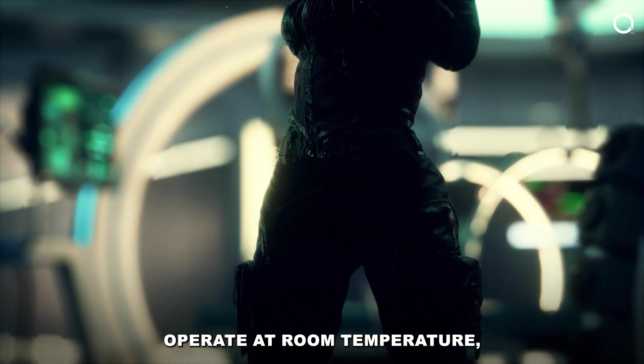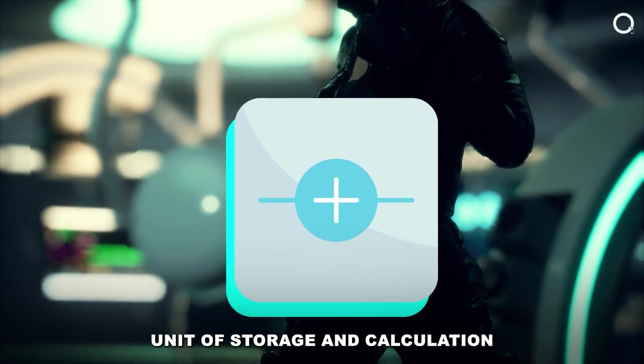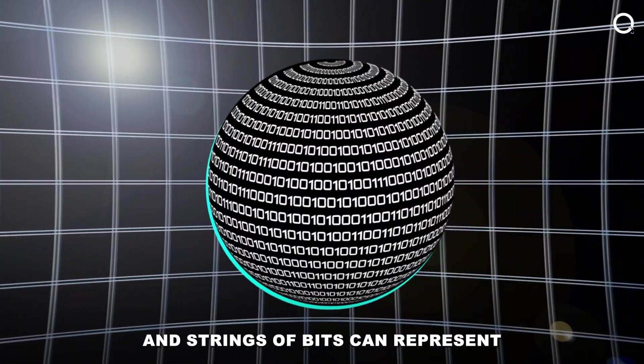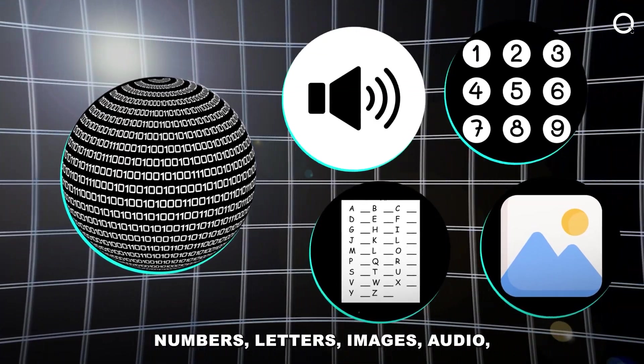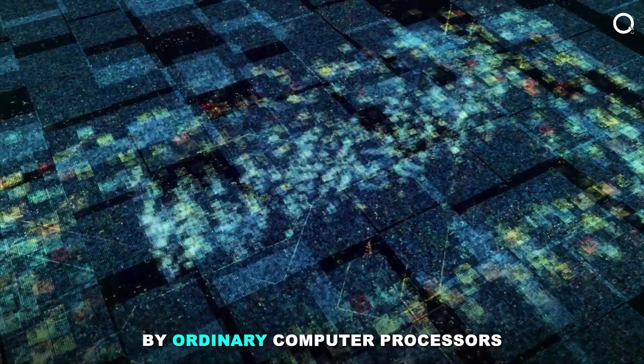Conventional computers operate at room temperature, and the bit is the fundamental unit of storage and calculation. It's either a 1 or a 0, and strings of bits can represent numbers, letters, images, audio, and so on, all of which can be stored and processed by ordinary computer processors.